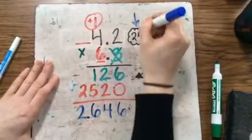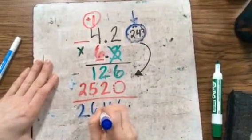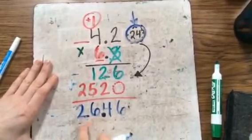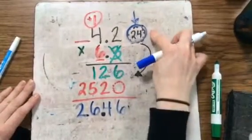If I know my answer is close to 24, I know I'm going to put my decimal here, because then it reads 26 and 46 hundredths, which is close to 24.